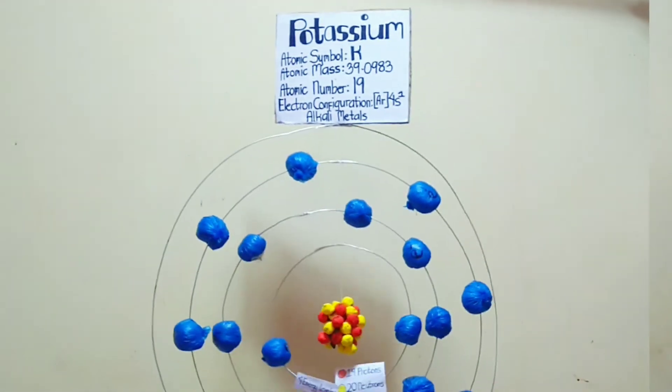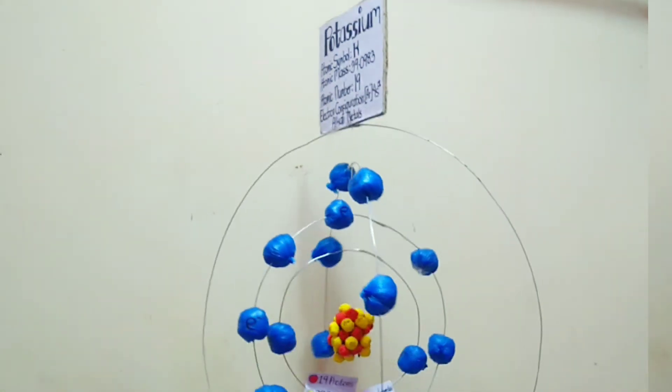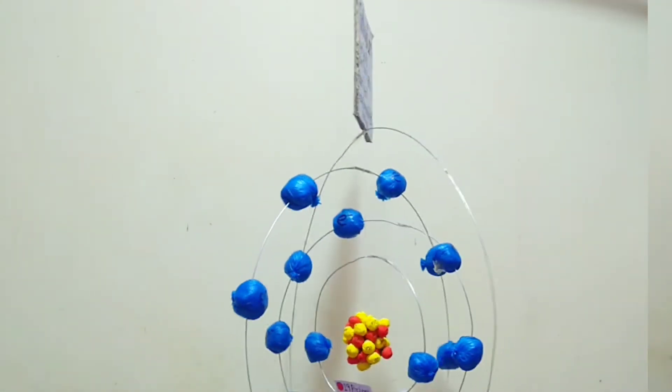Potassium is a chemical element with the symbol K and atomic number 19. It has atomic mass of 39 and classified as an alkali metal.